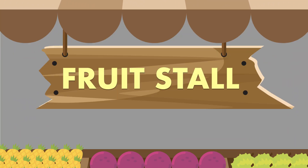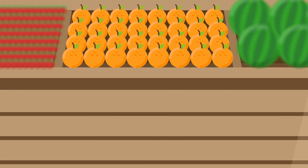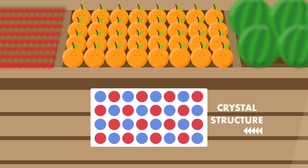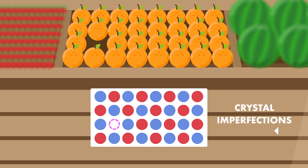In a fruit stall, a set of fruits arranged in a finite order or a regular pattern resembles a crystal structure. If a consumer takes a fruit from the rack, a defect happens in the arrangement of the structure. The defect in the regular arrangement of atoms, which is assumed as fruits here, is known as crystal imperfections, and the defect occurred here is known as point defect.